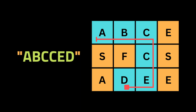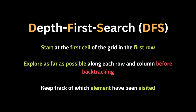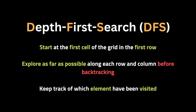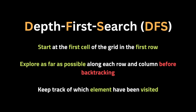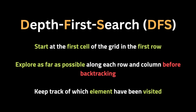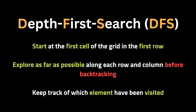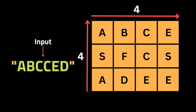The same letter cell can only be used once. For example, if we have this input of characters, we can write it by going this way until C, then down to C and so on — so it's possible to write this word using the matrix. To solve this problem we're going to use the Depth-First Search algorithm, starting at the first cell of the grid and exploring as far as possible along each row and column before backtracking, keeping track of which elements we have visited.